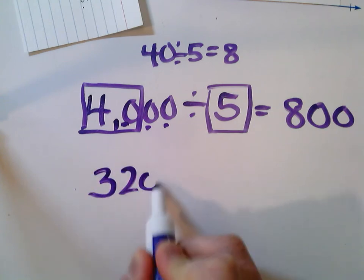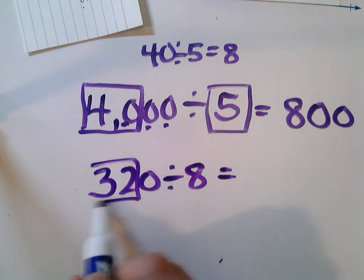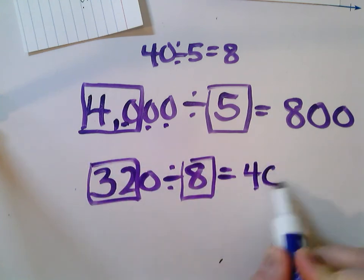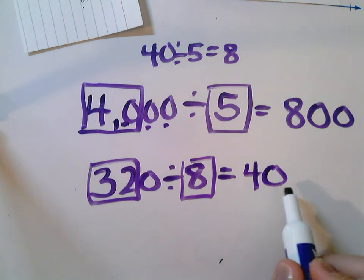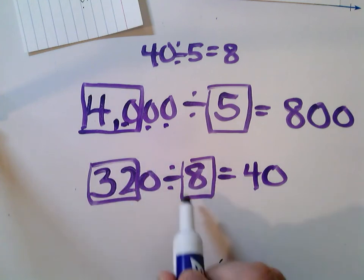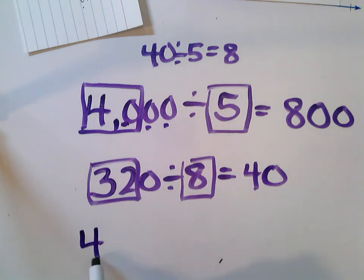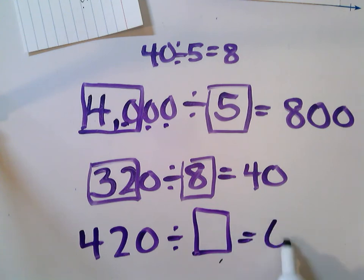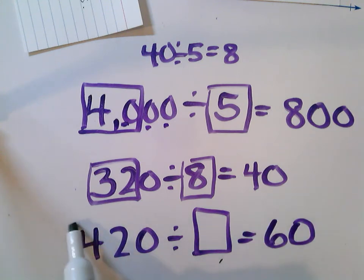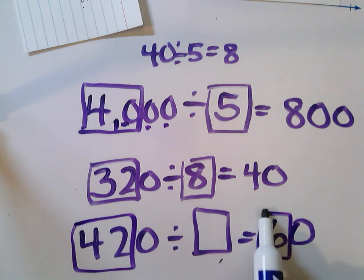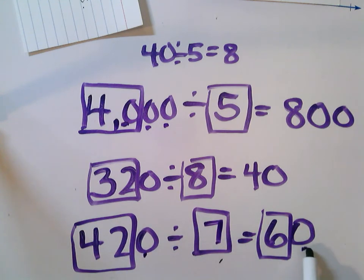Same thing if I had 320 divided by eight — 32 divided by eight is four, so 320 divided by eight is 40. It's a very simple process: you're going to look for those basic facts. What if I had something like this: 420 divided by something equals 60? I want to look at that basic fact — 42, and my answer is six. So I would have to think, what times six is going to equal 42? That's seven. I've got a zero over here and a zero over there, and my answer is seven. So you're going to look and work on some of these problems today on your Kami pages.